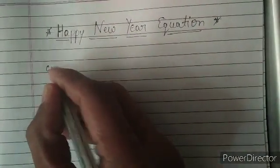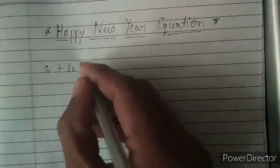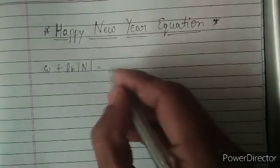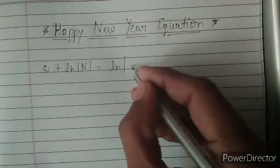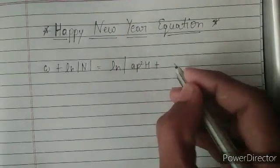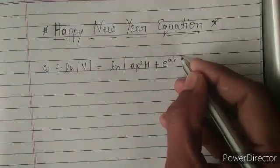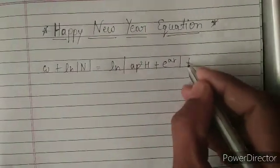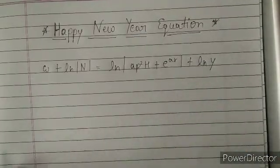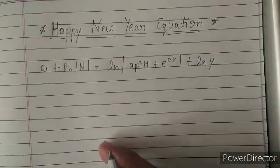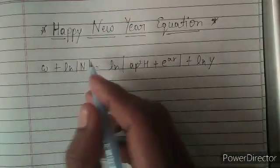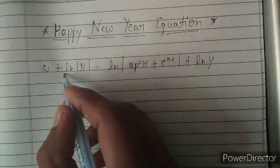We have the equation: W plus natural log of N plus natural log of A·P²·H plus e to the power A·R plus natural log of π. We are going to solve this equation.